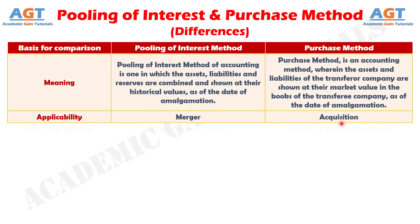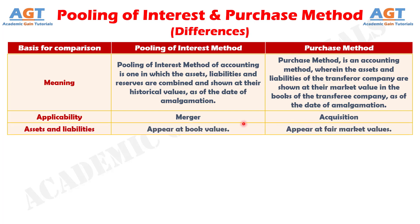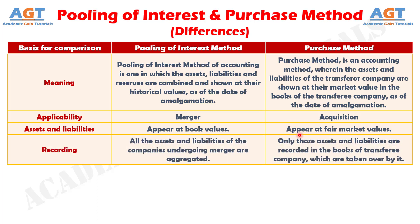Difference number 3: in pooling of interest method, assets and liabilities appear at their book values, whereas when purchase method of accounting is used, the assets and liabilities are shown at their fair market value.